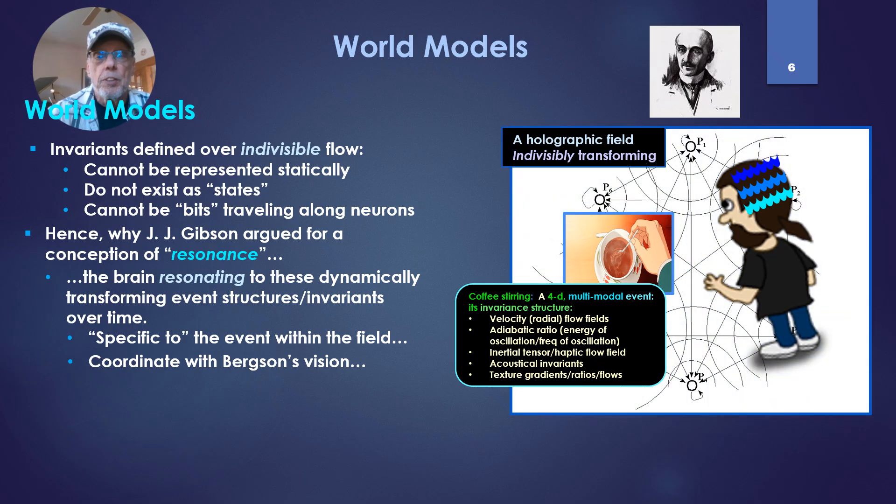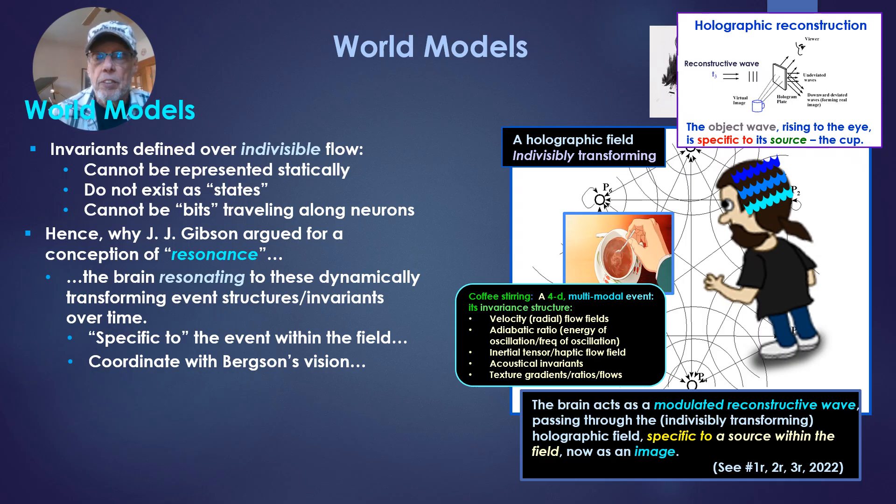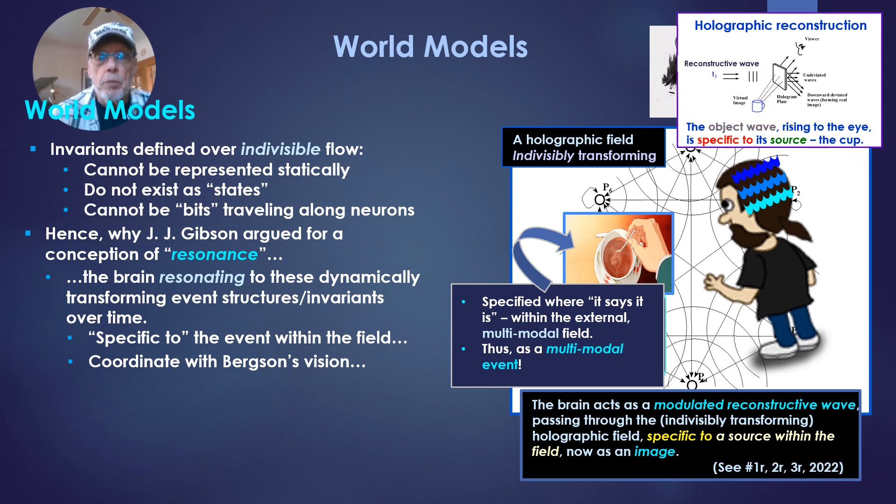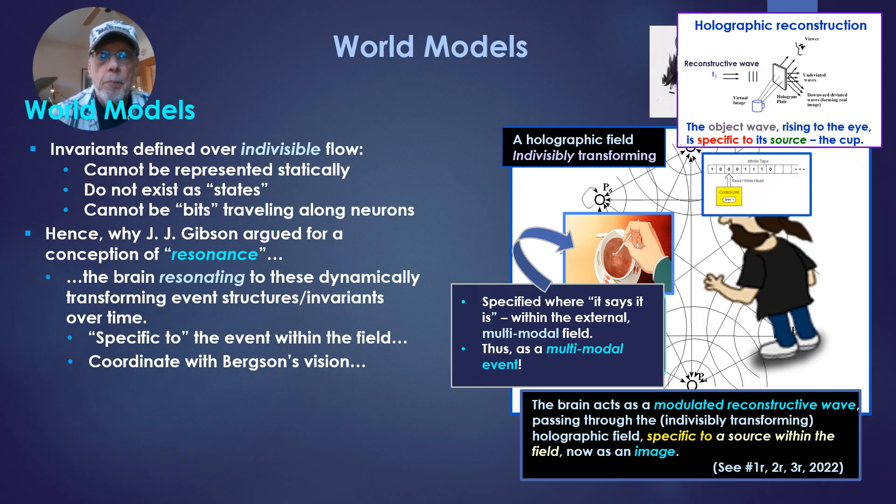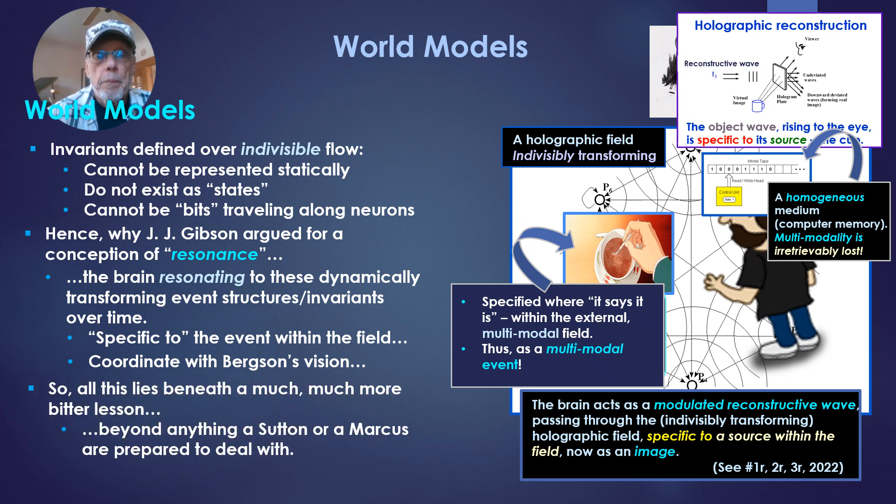And this was highly coordinate with Bergson's earlier vision, where Bergson placed that resonating brain within a holographic field, indivisibly transforming. And the resonance, then, is equivalent to a modulated reconstructive wave, passing through this indivisibly transforming holographic field, and again, specific to a source within the field, an aspect of the field now as an image. So specified right where it says it is, within the external multimodal field, that is, as a multimodal event. This is extremely important, because if we just slap a Turing machine into the brain and say that's what it is, discrete state by discrete state processing, well, what we've done is transform that multimodal event into a homogeneous medium, the computer memory. The multimodality is irretrievably lost. There's no such thing as a multimodal event inside a computer.